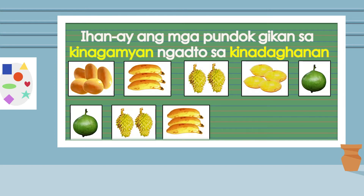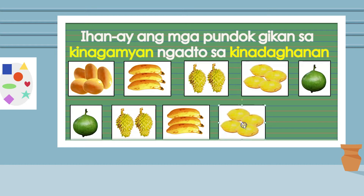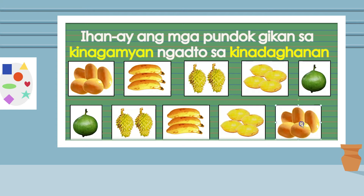Unsaman napundok sa mga prutas ang atong ibutang sa ikaupat nga hanay? Maayo kaayo mo, mga bata! Sakto! Ang upat ka kapayas. Unsaman napundok sa mga prutas ang atong kinagaghanan sulod? Very good! Ang pundok sa lima ka mangga. Mao'y atong ibutang sa kinatapusan.